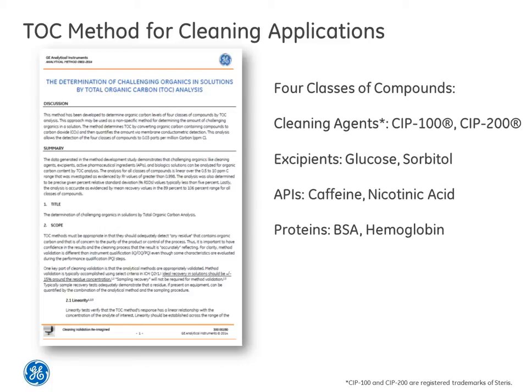This method was developed to determine organic carbon levels of four classes of compounds, which included cleaning agents, excipients, active pharmaceutical ingredients — also known as APIs — and proteins by TOC analysis.